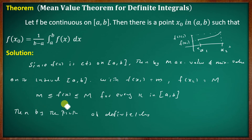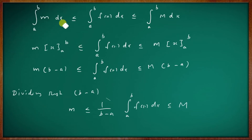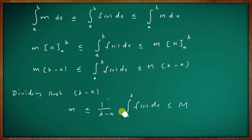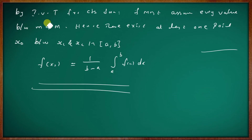Applying definite integration: the integral from a to b of m dx ≤ integral from a to b of f(x) dx ≤ integral from a to b of M dx. Evaluating: m(b−a) ≤ integral from a to b of f(x) dx ≤ M(b−a). Dividing by (b−a): m ≤ 1/(b−a) integral from a to b of f(x) dx ≤ M.